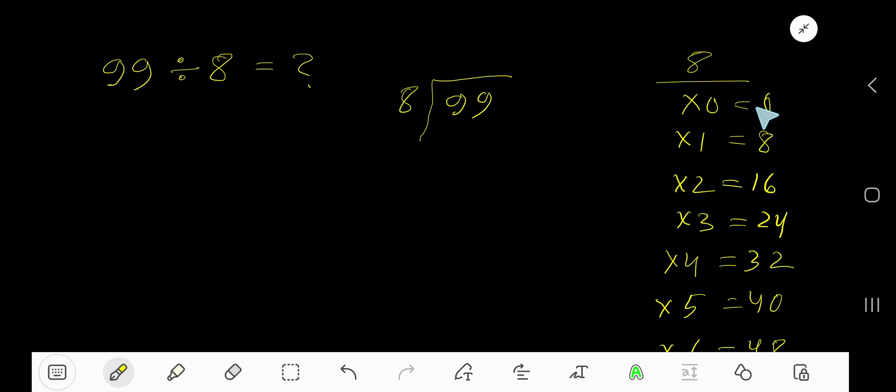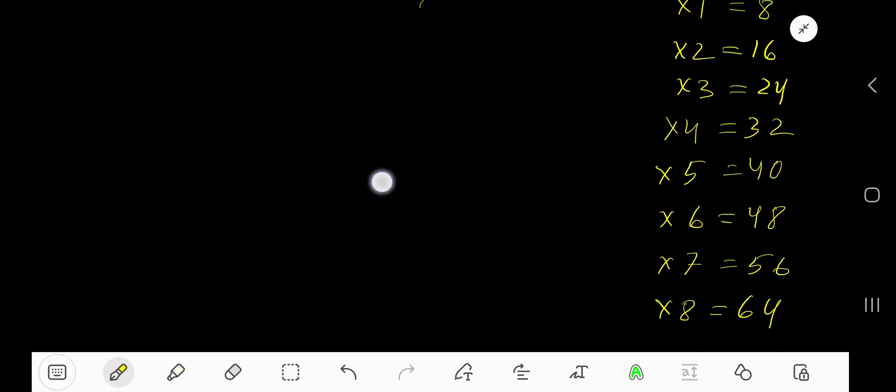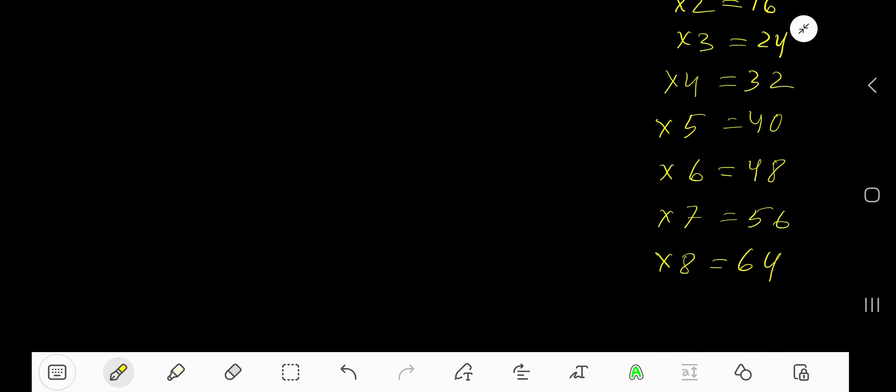To find out the multiplication table of 8 easily, just add 8 to the previous step. 0 plus 8 is 8, 8 plus 8 is 16, 16 plus 8 is 24, 24 plus 8 is 32, 32 plus 8 is 40, 40 plus 8 is 48, 48 plus 8 is 56, 56 plus 8 is 64.